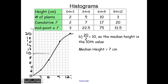I draw a line across at 10 and then straight down. With an accurate graph you'd get a value around 7 centimeters, maybe 7 to 7.5 depending on your curve. So our estimate would be about 7 centimeters — that is our best guess for the height of the middle plant.